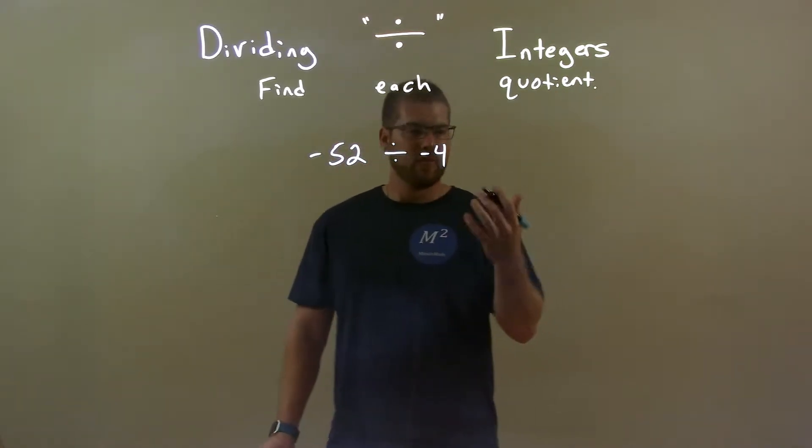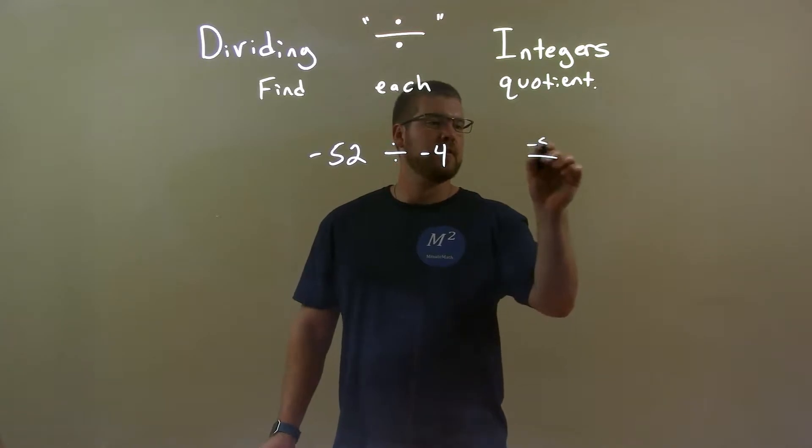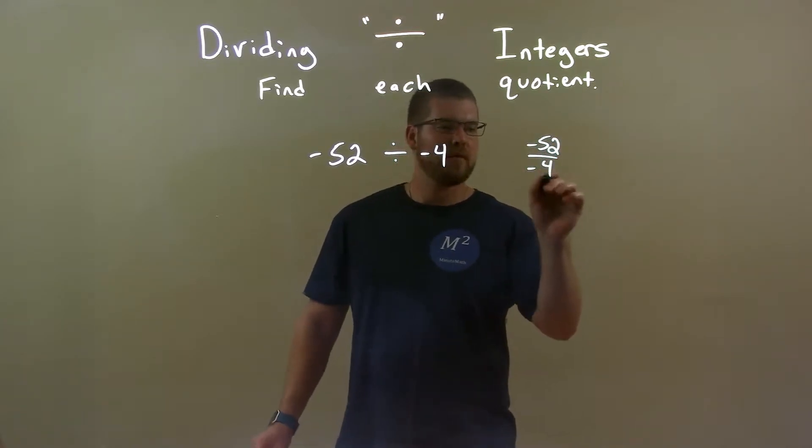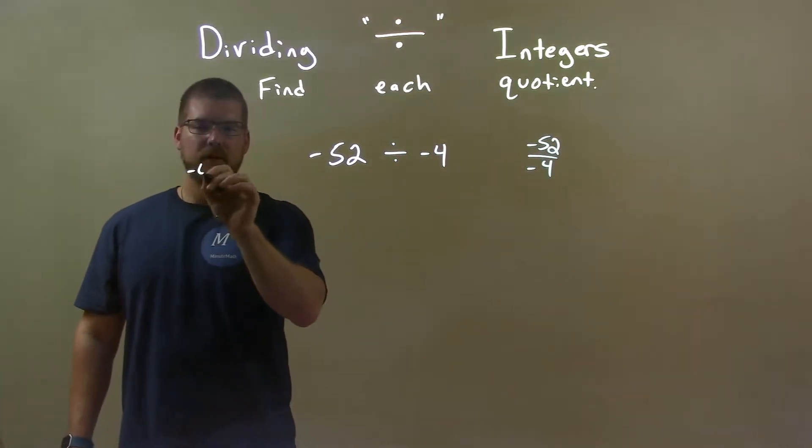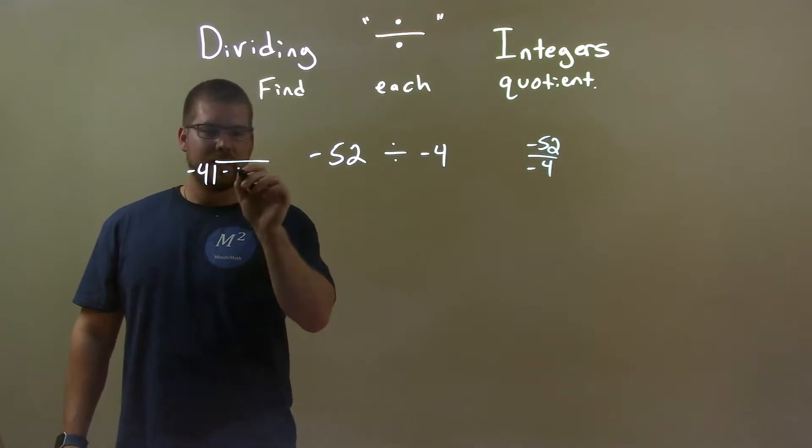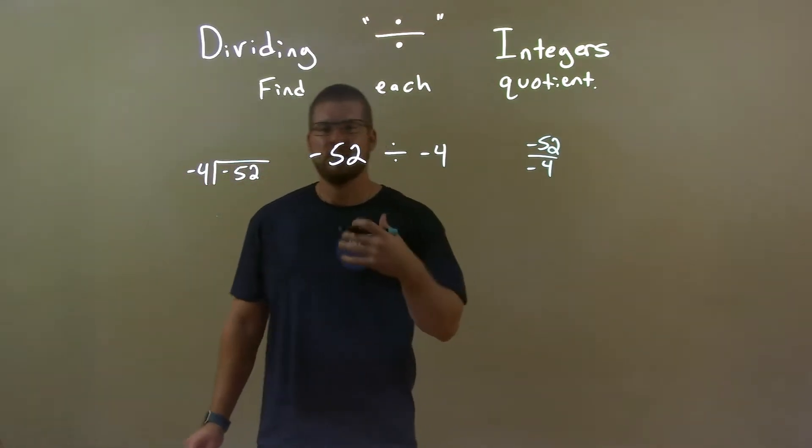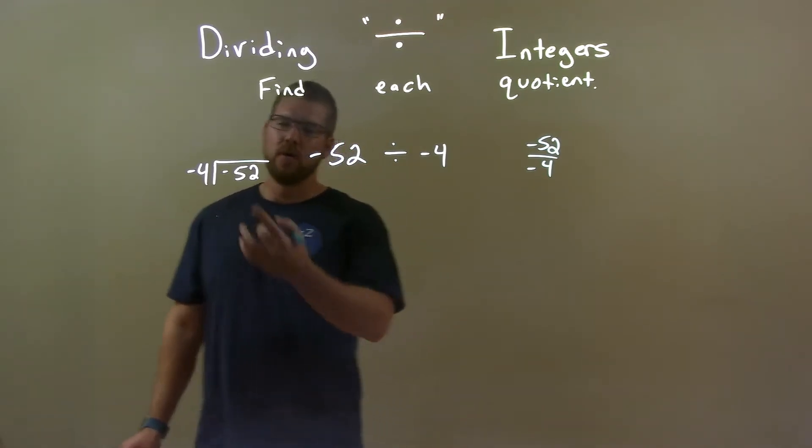Well, that can be written also as a fraction, negative 52 divided by negative 4, or long division. Negative 4, that goes into negative 52. Well, this one isn't necessarily a common times table, so let's go with our long division.